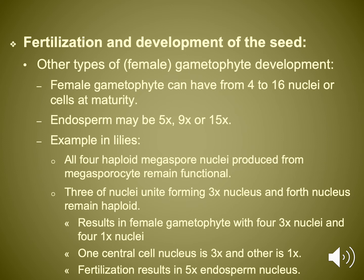With all angiosperms, double fertilization happens. There are two sperm: one fertilizes the egg, and the other leads to the formation of endosperm — the food that will nurture the plant as it develops. Often, endosperm may have polyploidy, so rather than having a single or double set of chromosomes, they may have 5 times, 9 times, or 15 times the number of chromosome sets than normal.